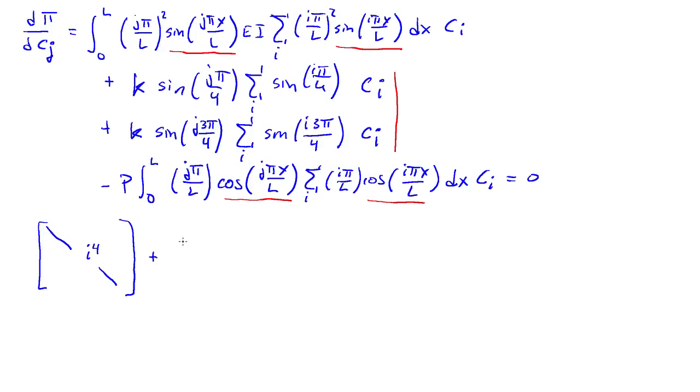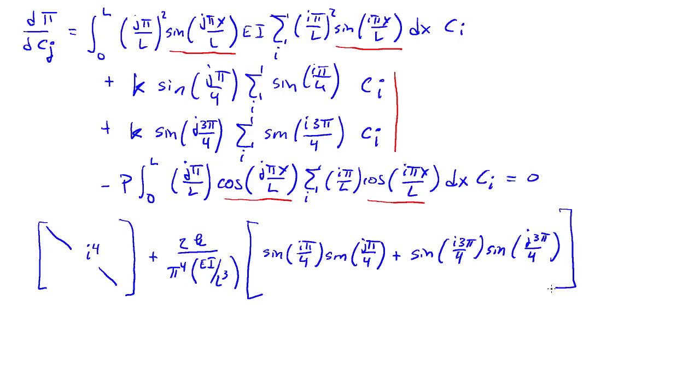The two terms in the middle are going to give me terms that look as follows. We have 2k over pi to the 4th divided by EI over L cubed times a matrix formed out of terms that are the products of the sine function. So we'll have sine I pi over 4 times the sine of J pi over 4 plus the sine of I 3 pi over 4 times the sine of J 3 pi over 4. So that's going to be a full matrix. Then the last term is going to give me a diagonal term: P over pi squared EI over L squared, and a diagonal matrix whose entries are simply I squared.